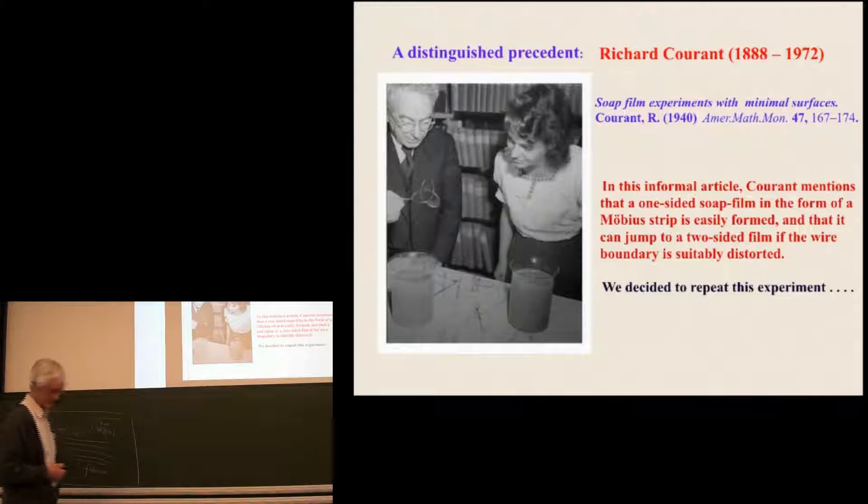There's a good precedent because it turns out that Richard Courant did this experiment. Here's a picture of him with one of his students back in 1941 or 1940 playing with soap film in his office, a trefoil knot. But in the article that he wrote, he mentions that a one-sided soap film in the form of a Möbius strip is easily formed, and that it can jump to a two-sided film if the wire boundary is suitably distorted. So we have there the possibility of an interesting topological jump from a one-sided surface to a two-sided surface.